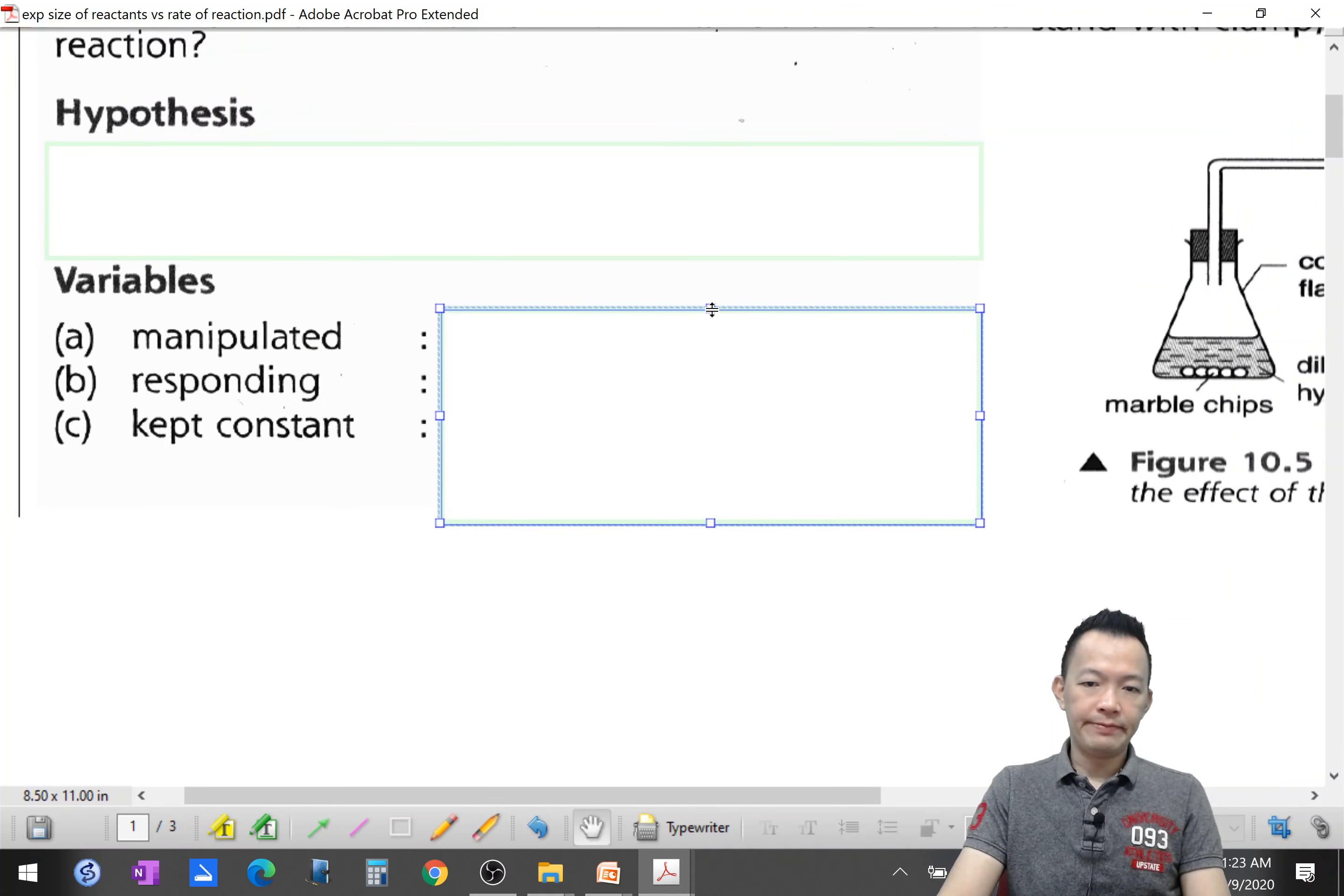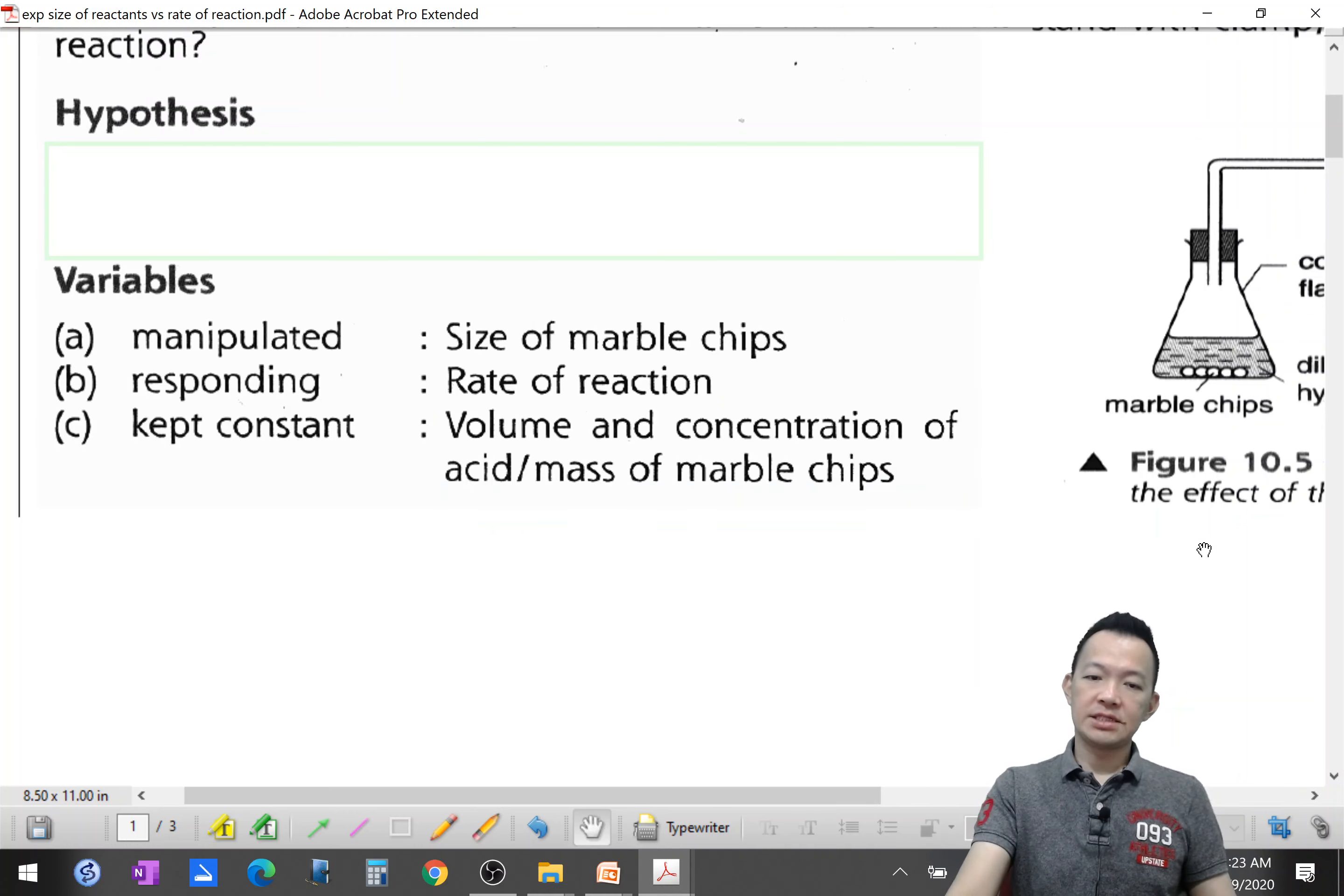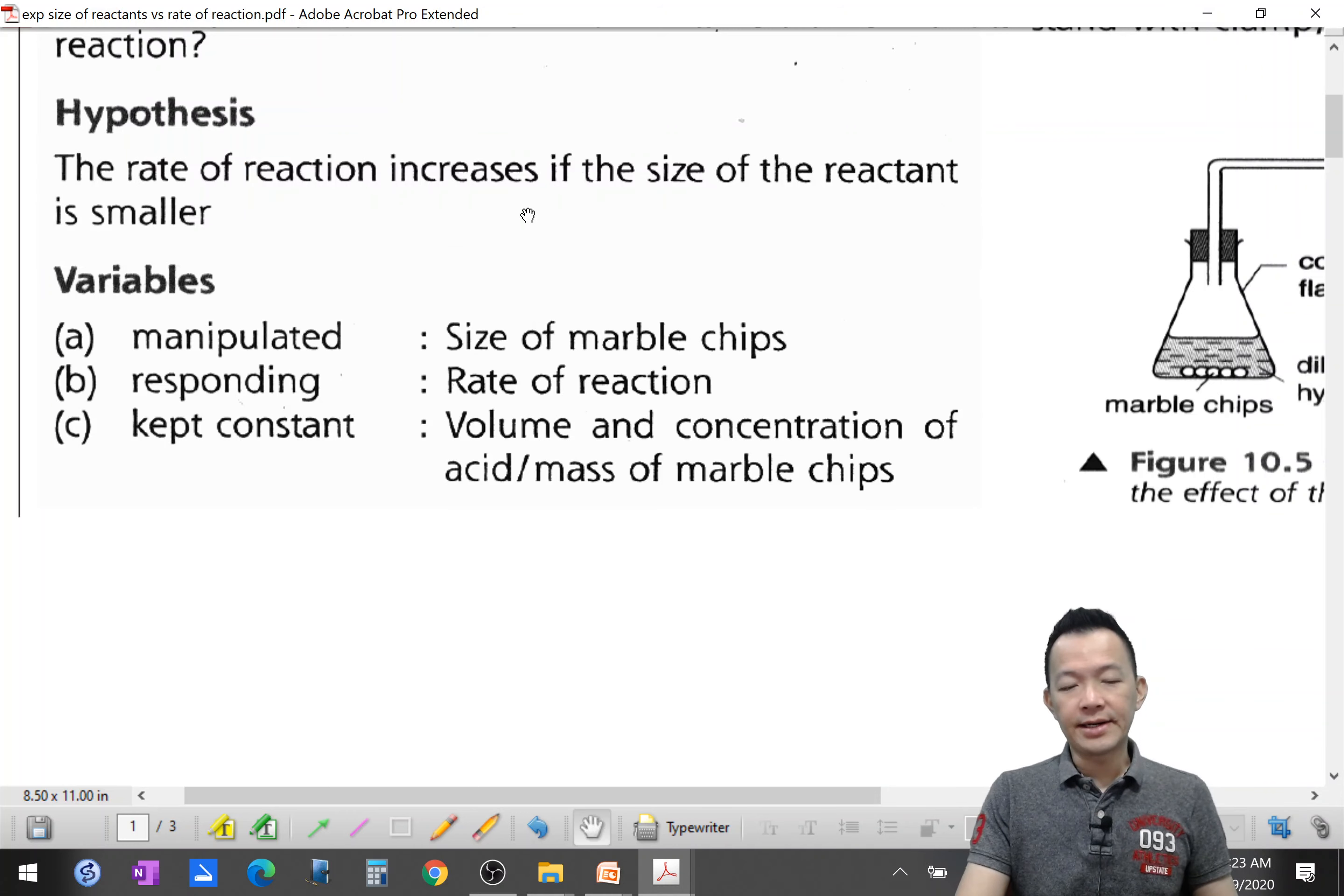Today's manipulated variable: size of reactant. Responding variable: the rate of reaction. What must be constant: your acid, the type of the acid, the volume of the acid, the concentration of the acid, or the mass of the marble chips. Hypothesis: the smaller the size of the reactant, the higher the rate of reaction. We use higher, we don't use faster. So the rate of reaction increase if the size of the reactant is smaller.